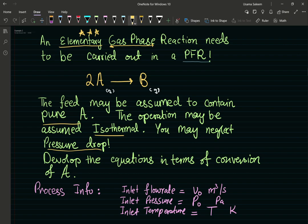Develop the equations in terms of conversion of A. And the following are my process info. Inlet flow rate V0, inlet pressure P0, and inlet temperature T. I'm just going to call it T because the inlet and outlet pressure are the same. Inlet and outlet temperature are the same.